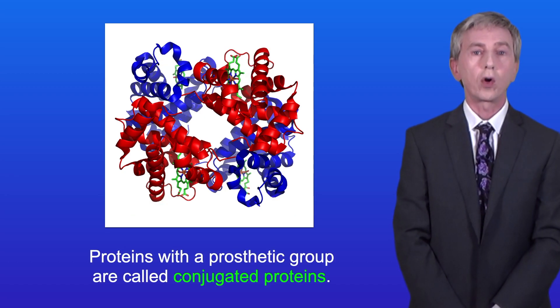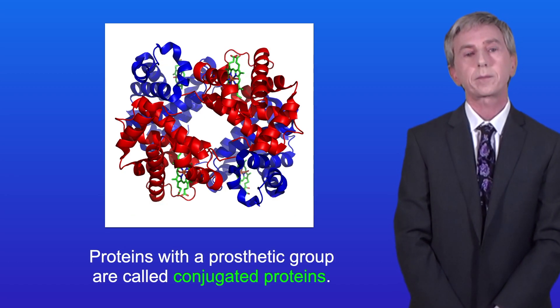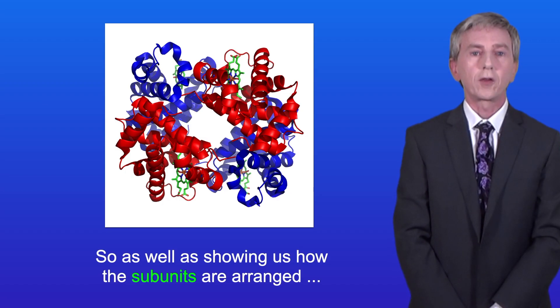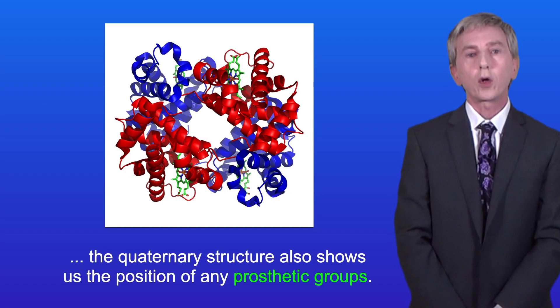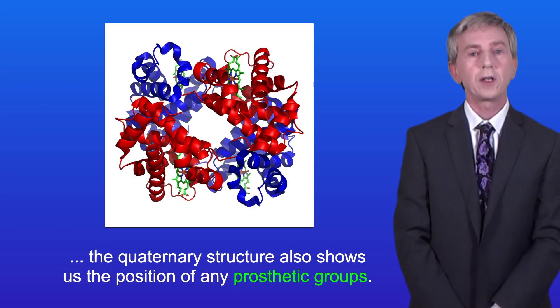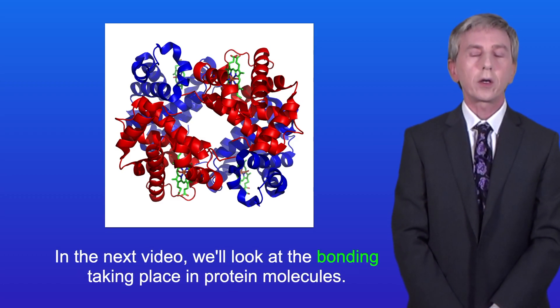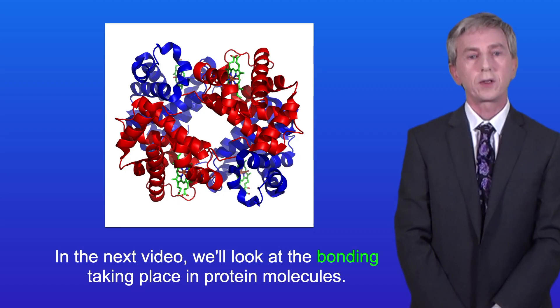Proteins with a prosthetic group are called conjugated proteins. So as well as showing how the subunits are arranged, the quaternary structure also shows the position of any prosthetic groups. In the next video, we'll look at the bonding taking place in protein molecules.